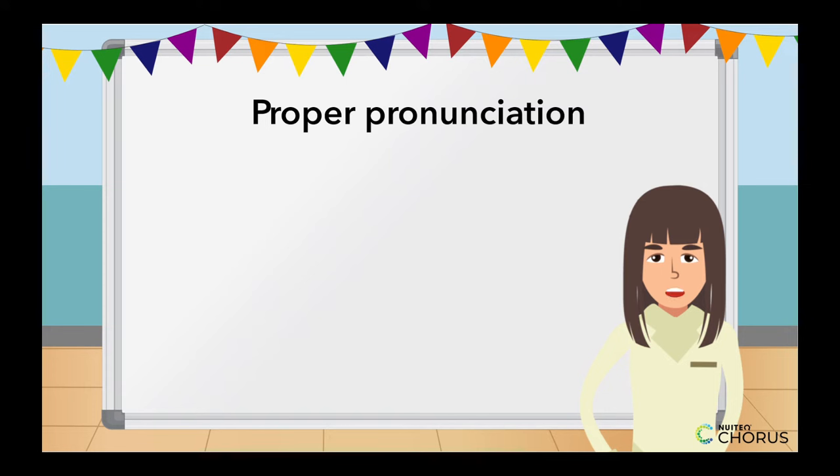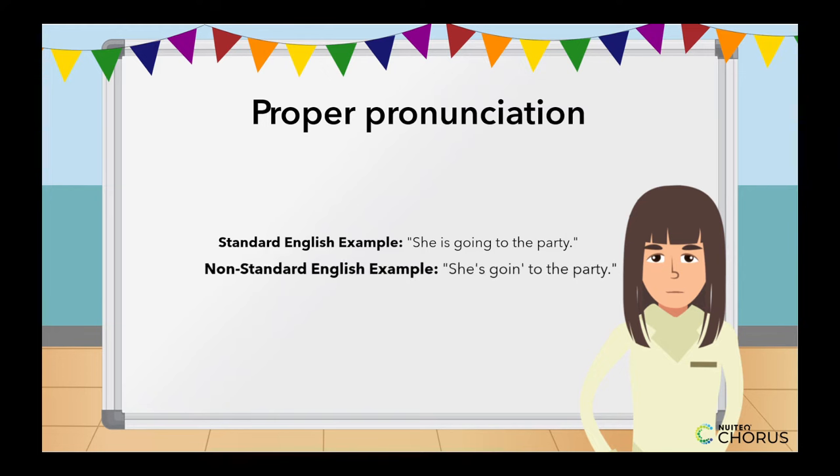Feature 2: Proper Pronunciation. Standard English often follows the received pronunciation, which is a way of speaking that maintains a consistent and universally recognized pronunciation. Standard English example: She is going to the party. Non-Standard English example: She's going to the party.